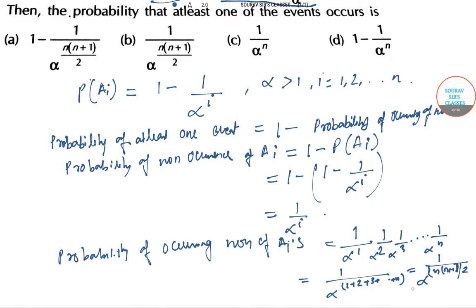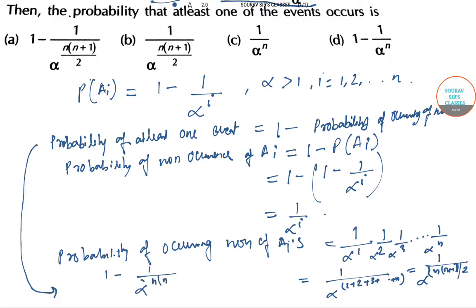Substituting back, the probability of at least one event occurring is 1 minus 1 by alpha to the power n(n+1)/2. Hence this is the required answer, and option A is correct. Thank you for watching the video.